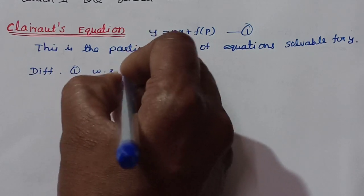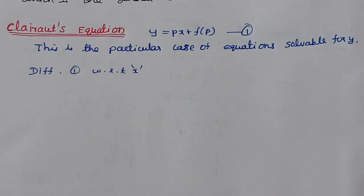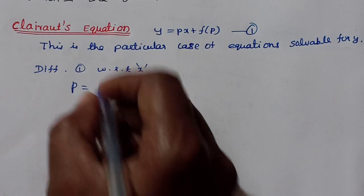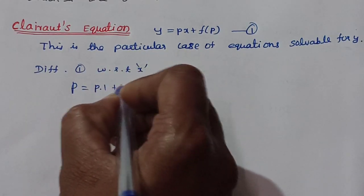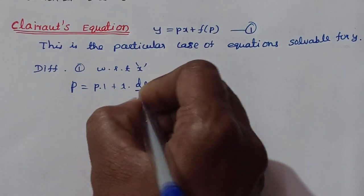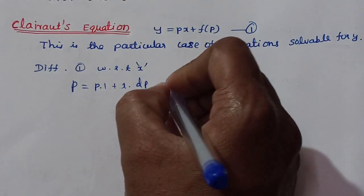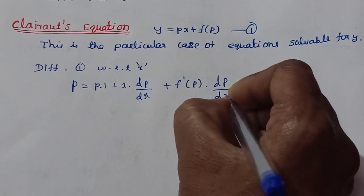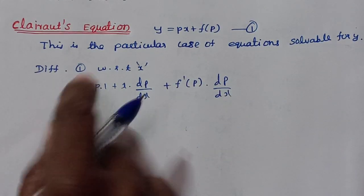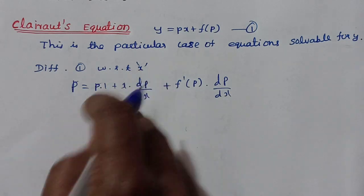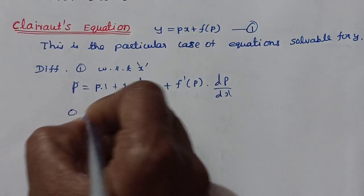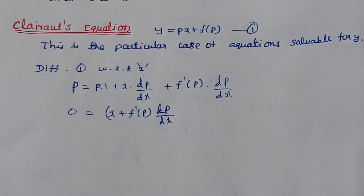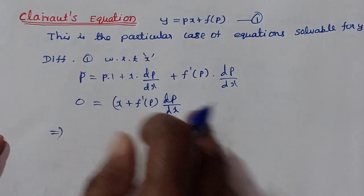Differentiate equation 1 with respect to X. We replace dy/dx with P. Applying the product rule, we differentiate 1 with respect to X. This gives us P equals P plus X times dp/dx plus f-prime of P times dp/dx. The terms cancel to give 0 equals X plus f-prime of P times dp/dx — this is a product of two factors equal to zero.